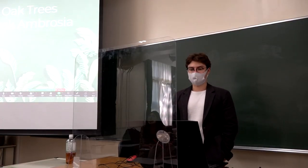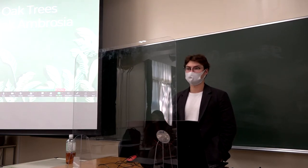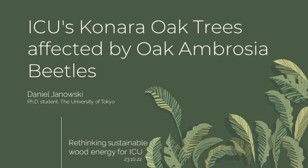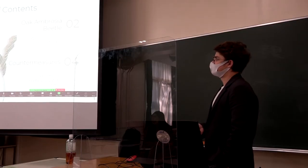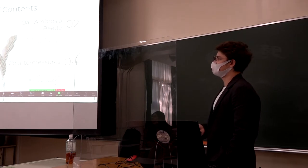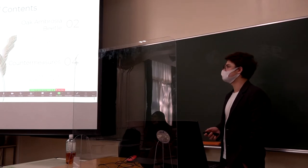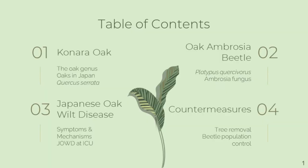Oak wilt disease is caused by oak ambrosia beetles and it's a disease affecting many trees in Japan, particularly on the ICU campus. In this presentation, we'll first take a brief look at the konara oak, what it is and its significance. Then we'll look at the oak ambrosia beetle and the wilt disease it causes, and finally we'll think about some countermeasures to prevent or fight it.